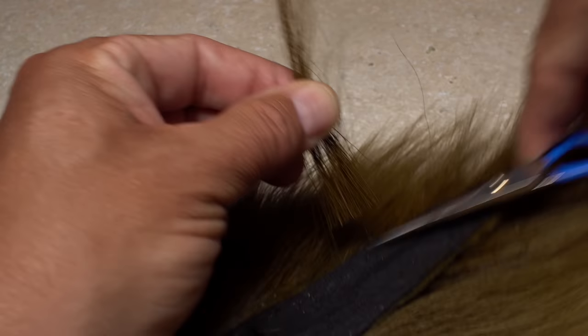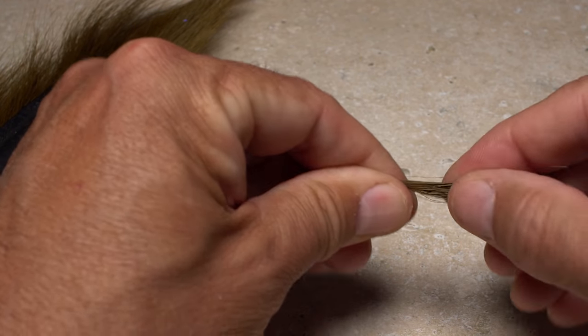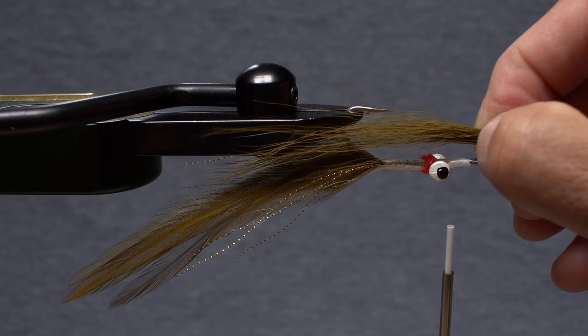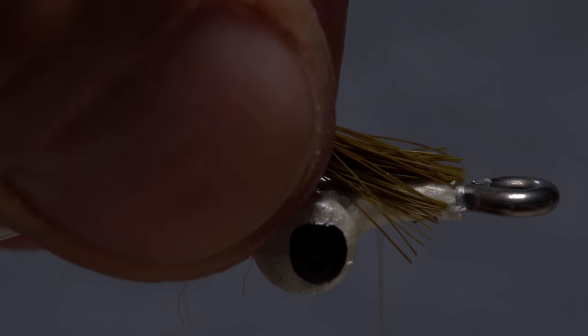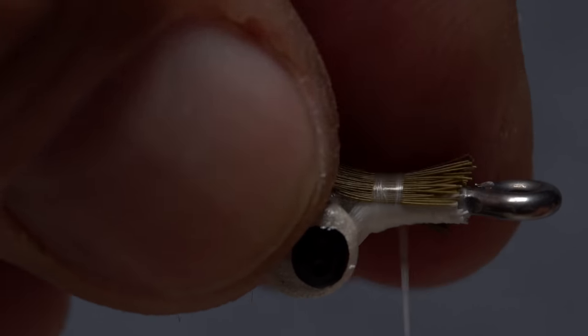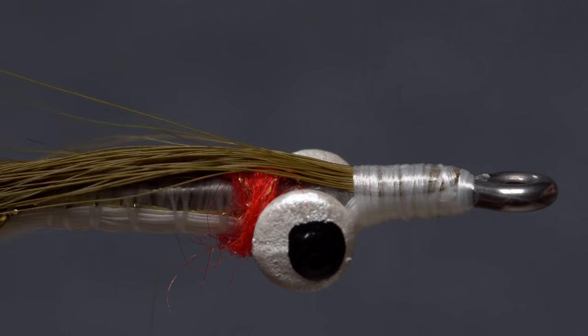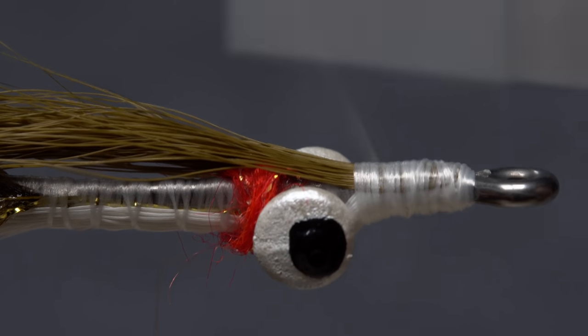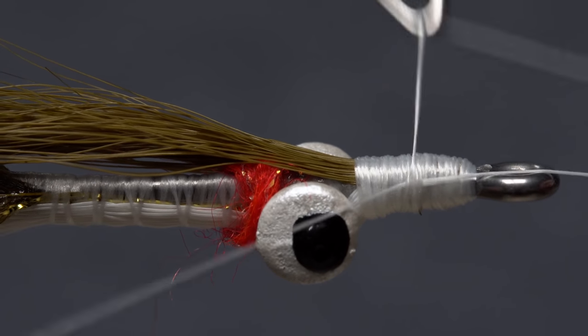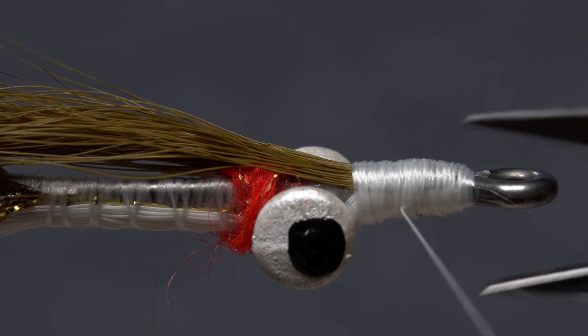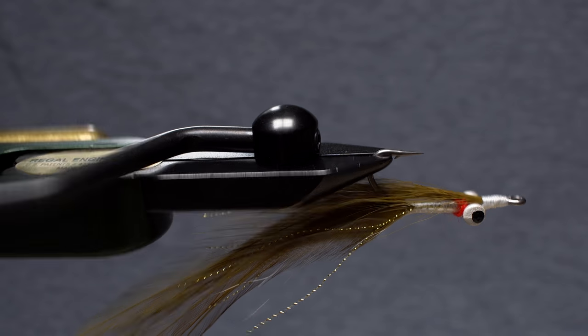Now select a clump of olive bucktail similar in size to the last white clump. As before, snip the hair free from the hide, strip out the short hairs from the butts, and measure so the tips extend about halfway down the tail. Snip the butts off square. Lay them against the hook shank at a 45-degree angle with the top edge at the back of the hook eye. Then take thread wraps to bind them down. Again, you're looking for a gentle taper down to the hook shank. How much you want to build up the head of the fly with thread wraps is really a matter of personal preference. I prefer a head that's fairly slim, about like this. When you're happy with the shape, do a five or six turn whip finish, seat the knot well, and snip or cut your tying thread free. Get the olive bucktail split equally on either side of the hook, then reorient the fly back into its normal position.